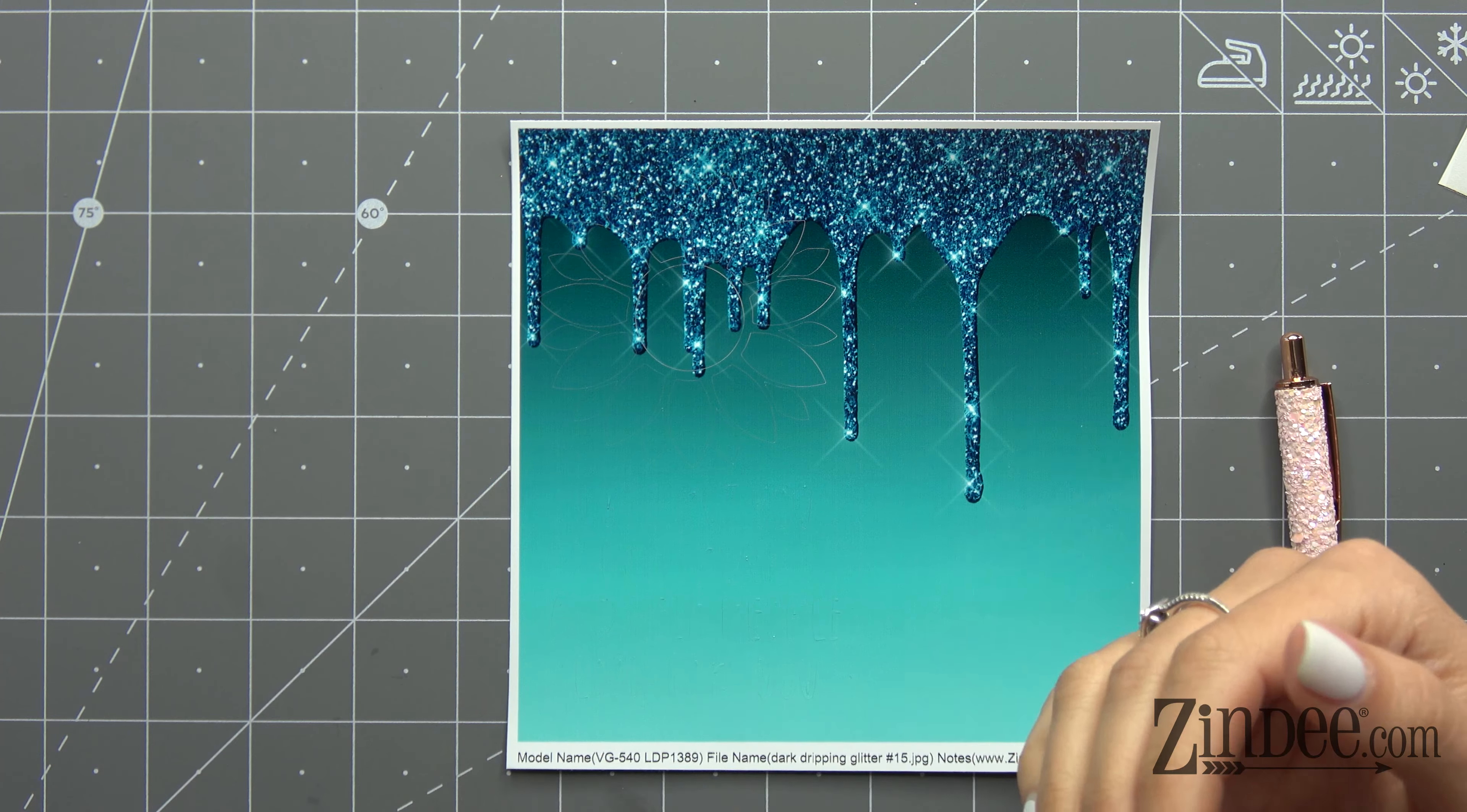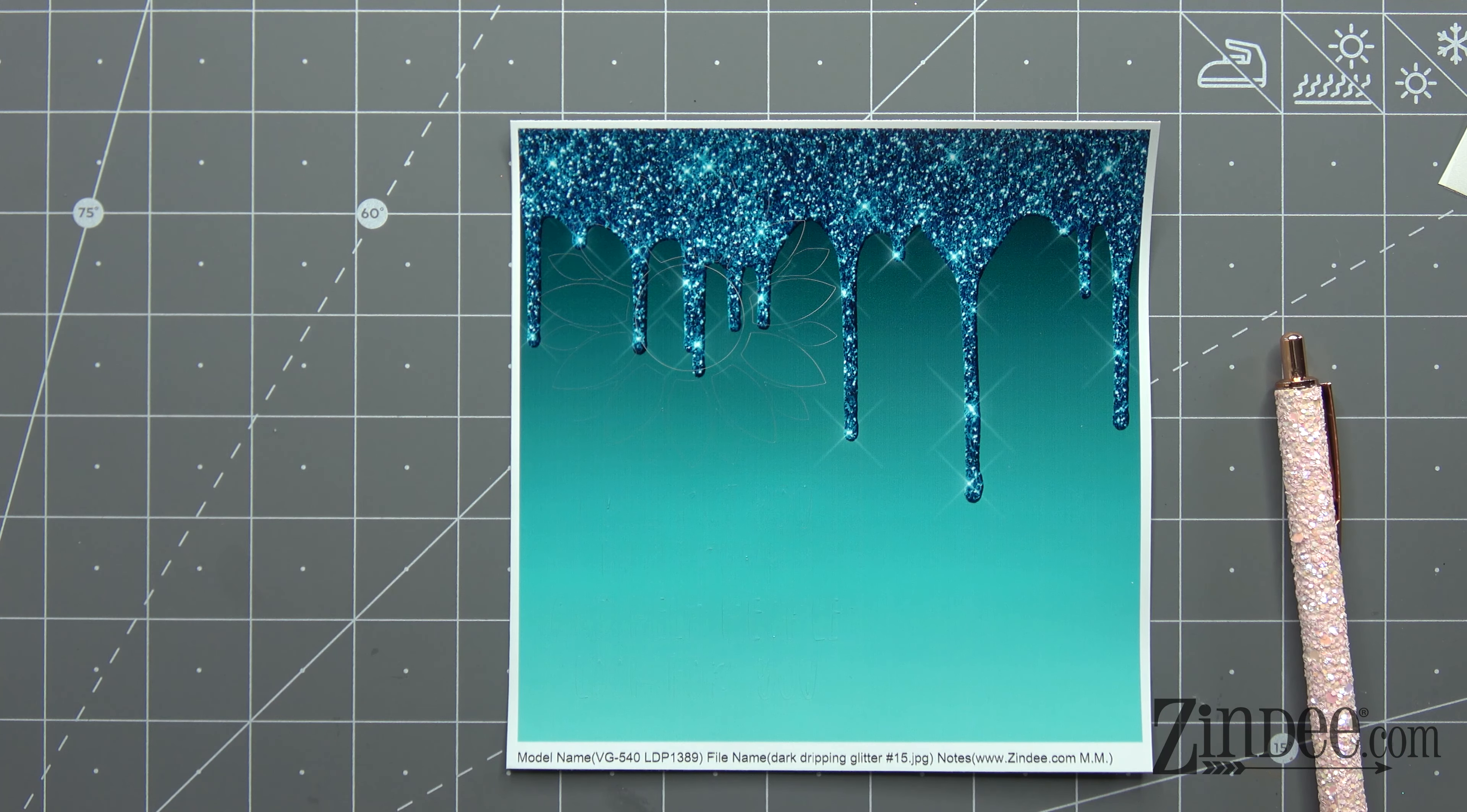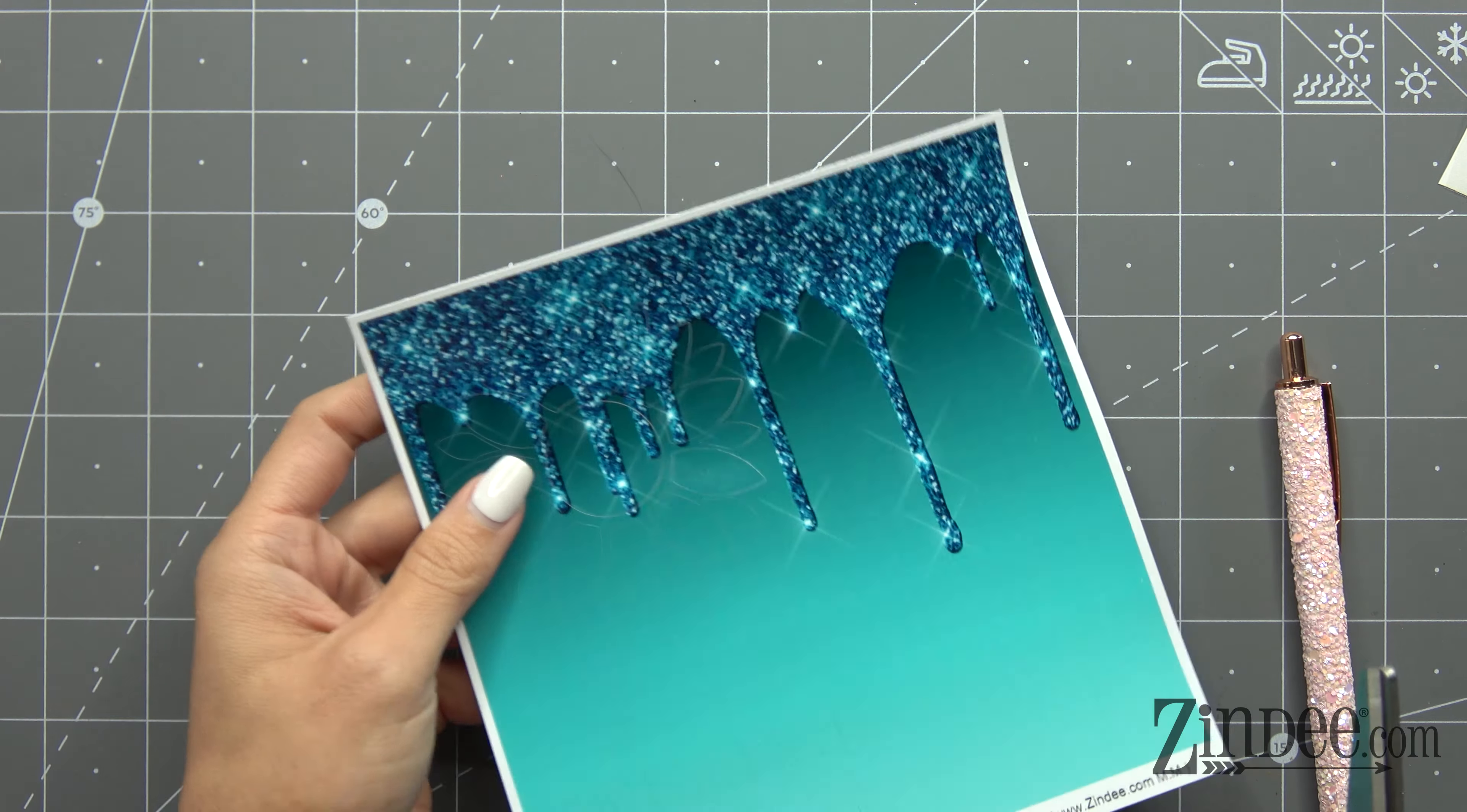A lot of times when you're weeding normally and you pull your vinyl back, all those little details - the dots of the I's, letters, that kind of stuff - just want to come right along with that transfer tape. So this is just another way to do it that makes it easier for things that are super detailed or delicate.